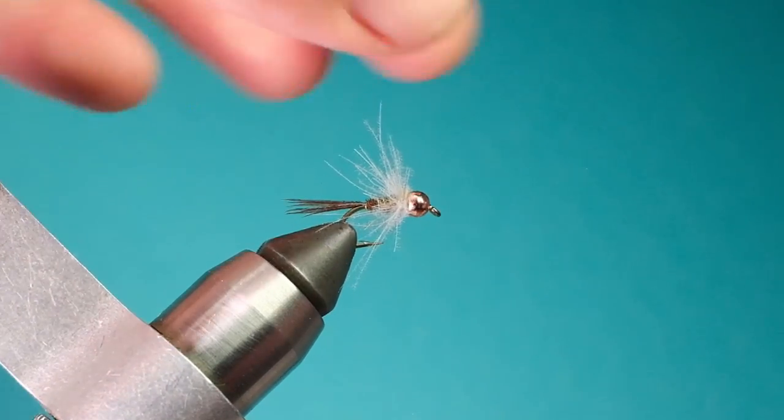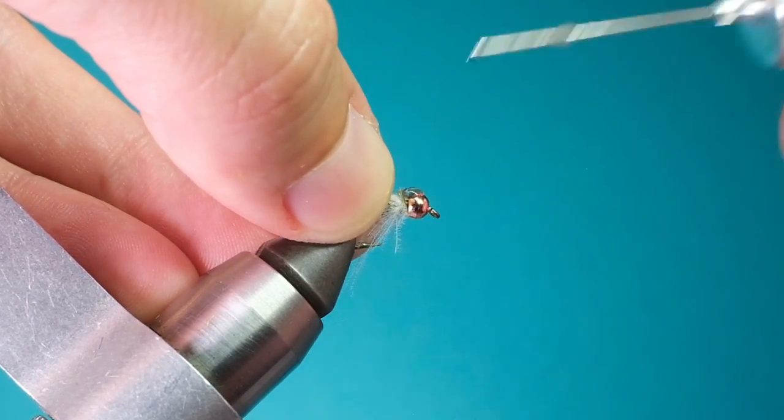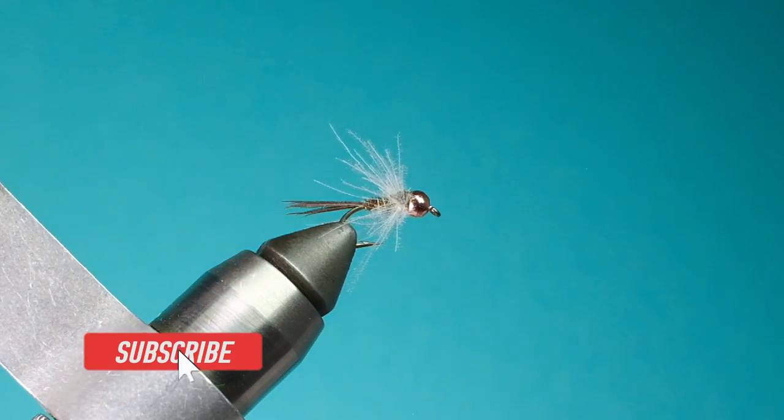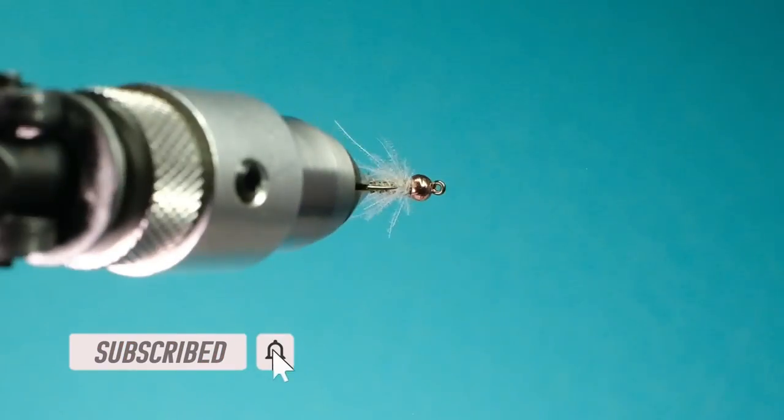Last, add a drop of head cement and you're done. And that's the CDC Pheasant Tail Nymph, my favorite variation of a classic.